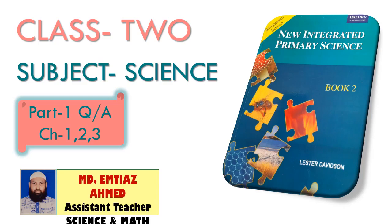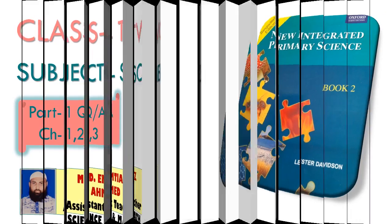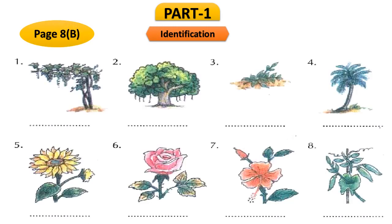I will start with the identification. Please open your textbook to page number 8, where at question B you will see some pictures. There are 8 different pictures of a variety of things and we need to identify them one by one.